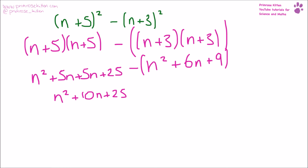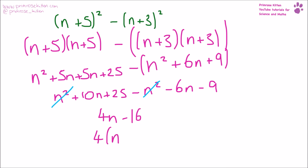Remember, this whole second expansion is all minus. So what we end up with is minus n squared minus 6n minus 9. Now n squared minus n squared just cancels. 10n minus 6n gives us 4n. And 25 minus 9 gives us 16. We've got 4 and a multiple of 4 here, so we can take 4 outside the brackets and write 4(n + 4).